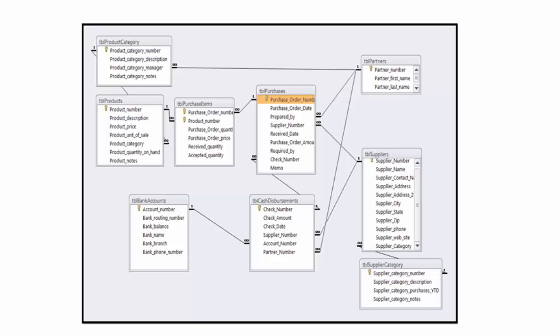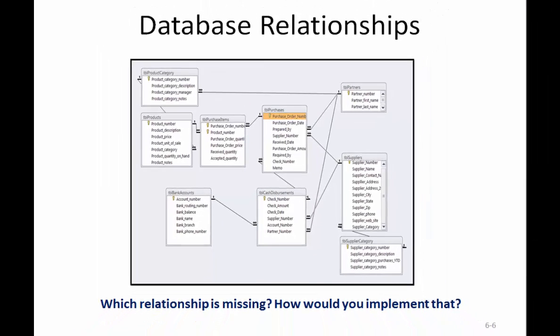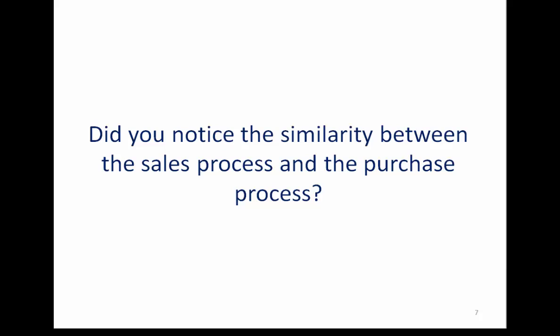Which relationship in this case is missing — how would you implement it? Finally, the purchases and payments process is very similar to the sales process. What is different? Go back and review the sales process and see if you can identify the things that change between the sales and cash receipts process and the purchases and payments process.